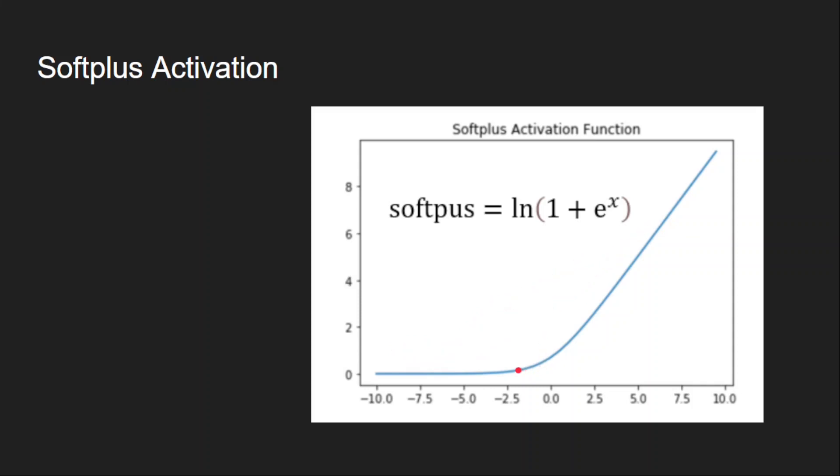As you can see here, this has a smooth transition around zero. In case of ReLU, there will be a discontinuity at zero, whereas here it is a continuous function with smooth transition across zero.